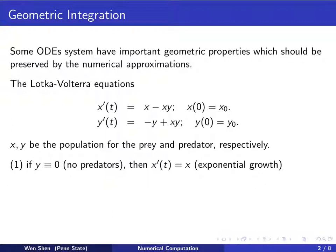Let's try to understand what the model is doing. First, we see that if y is identically 0, that means there are no predators, then the equation for the prey is x' = x. We know this is an exponential growing model. x will grow exponentially with rate 1.